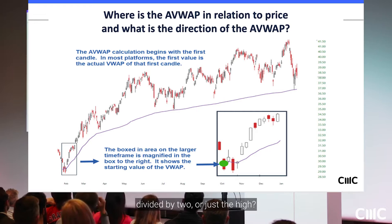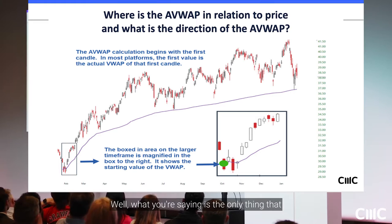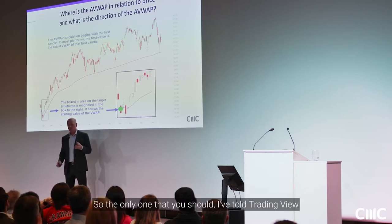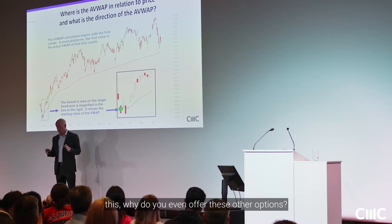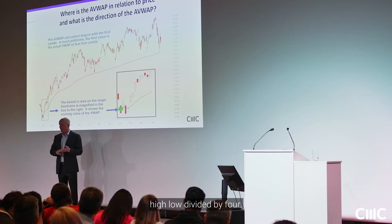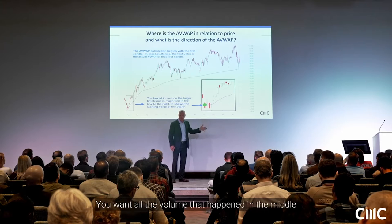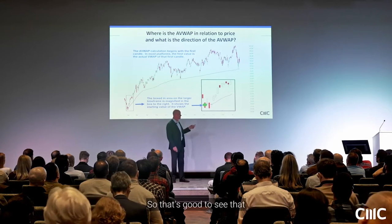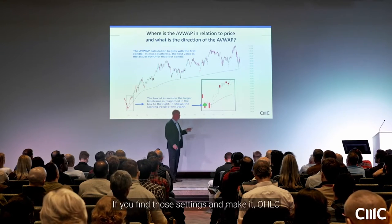TradingView will ask if you want to use high-low-close divided by three, high-low divided by two, or just the high. If you say just the high, you're saying the only thing that mattered was the volume traded at the exact high of that day — that doesn't represent the consensus. The only one you should use is open-high-low-close divided by four, because you want all the volume from the open, the middle of the day, and the close. That gives you the true average price.